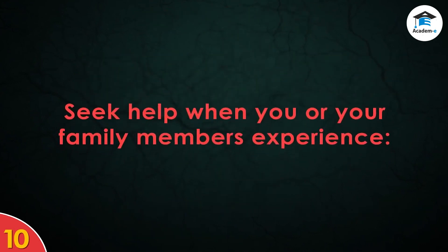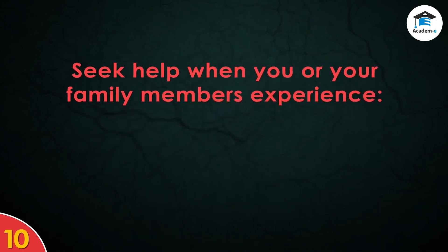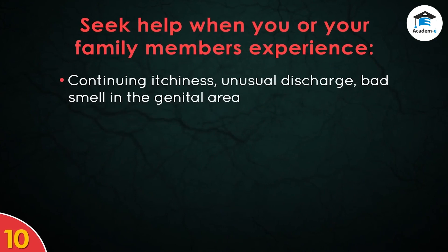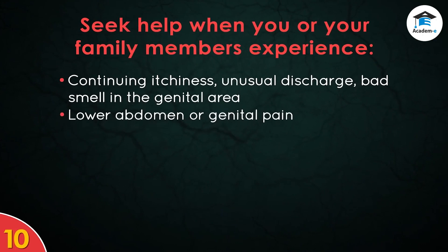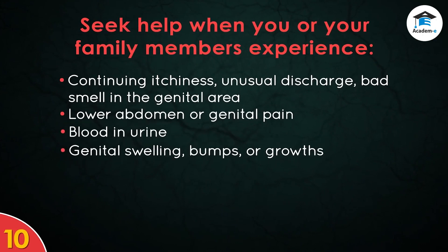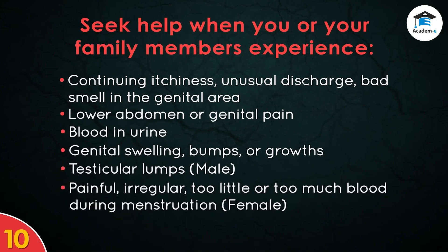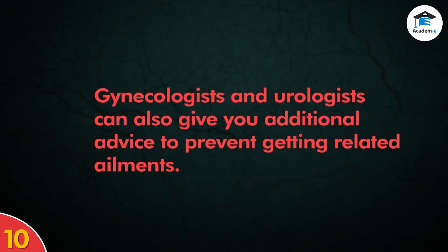You and your family members may need to visit these doctors when experiencing: continuing itchiness, unusual discharge, or bad smell in the genital area; lower abdomen or genital pain; blood in urine; genital swelling, bumps, or growths; testicular lumps; male painful urination; irregular, too little, or too much blood during menstruation (female); or possible infertility. Gynecologists and urologists can also give you additional advice to prevent related ailments.